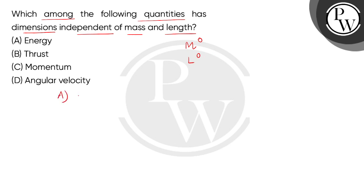If we check the first option, which is energy. Energy dimensions are the same as work, so we can write M dimension 1, L squared, T minus 2. So this option is incorrect.